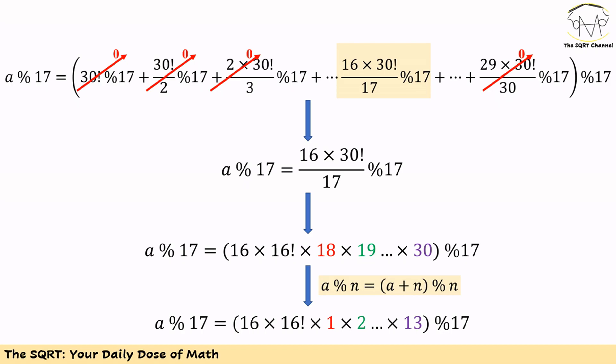To simplify further, remember that 30 factorial equals 16 factorial times 17 times 18 times 19, up to 30. So we can write 16 times 30 factorial over 17 as 16 times 16 factorial times 18 times 19, and so on up to 30, then apply mod 17 at the end.